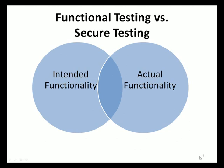To better conceptualize the goals of functional testing as compared to security testing, let's focus on the illustration on this slide. The circle on the left corresponds to the intended functionality of an application — the functionality envisioned by the designers. The circle on the right corresponds to the actual implemented functionality of an application — the functionality implemented through the source code and compiled binary. Let's now walk through each of these sections and observe the roles fulfilled by both functional and security testers.